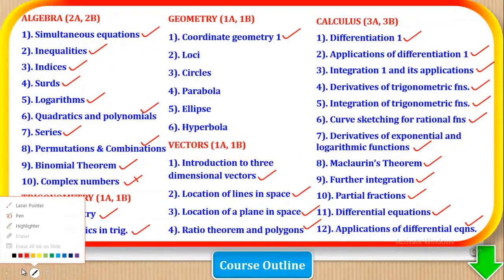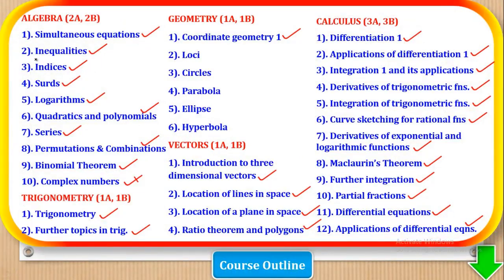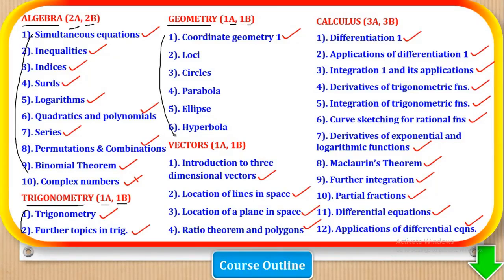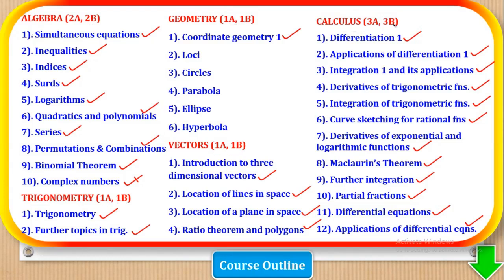Let's first look at the course outline. Math Paper 1, Pure Mathematics, is divided into five parts. The first part is Algebra, where two questions come in Section A and two in Section B. The second part is Trigonometry, where one comes in Section A and one in Section B. The third part is Geometry, one in Section A and one in Section B. The fourth part is Vectors, and lastly Calculus, where three come in Section A and three in Section B.